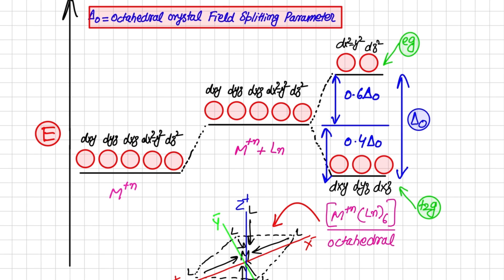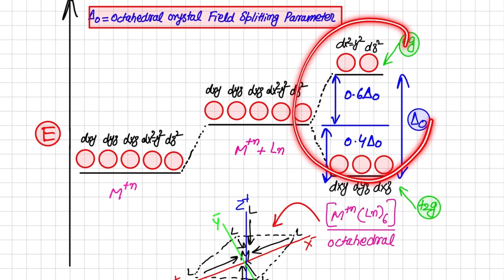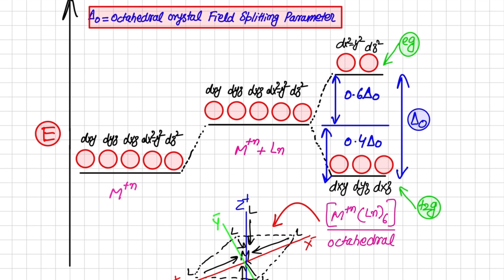Although all orbitals go high in energy, their degeneracy is not yet lost at this stage. The reason is that no bond has been formed yet between the metal and ligand — the ligands have only come closer due to electrostatic attraction. Once the ligands approach further and a bond is formed, if the geometry is octahedral, the splitting occurs in a specific manner.